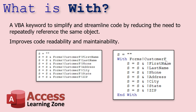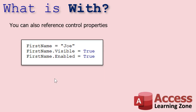That's where With comes in. With With, you just say With and then the object name — so it's Forms!CustomerF — and then inside this With block, all you have to do is say bang FirstName, bang LastName, bang PhoneNumber, and so on, instead of having to repeat Forms!CustomerF for every one of those lines.